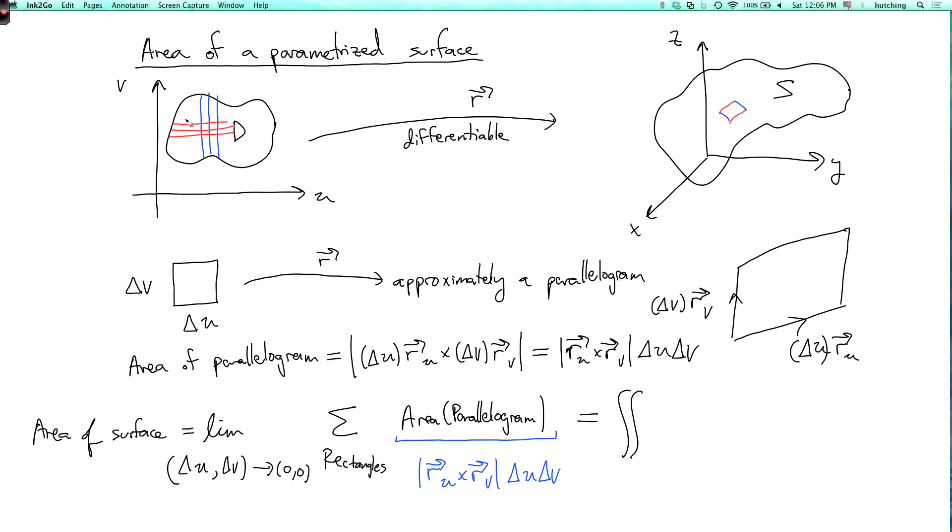So you get the double integral over what? Over the domain d on which our surface is defined. So you get the double integral over d of the length of the vector r_u cross r_v dA. Right? So this is the formula for the area of a parametrized surface. So let's do examples.